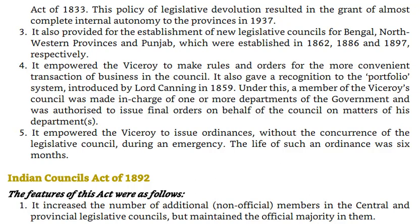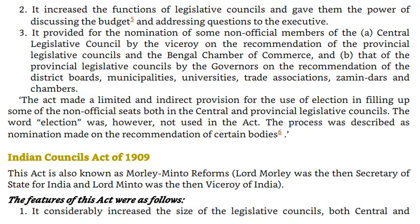Indian Councils Act of 1892. Its features were: 1. It increased the number of additional non-official members in the central and provincial legislative councils, but maintained the official majority in them. 2. It increased the functions of legislative councils and gave them the power of discussing the budget and addressing questions to the executive. 3. It provided for the nomination of some non-official members of (a) the central legislative council by the Viceroy on the recommendation of the provincial legislative councils and the Bengal Chamber of Commerce, and (b) the provincial legislative councils by the governors on the recommendation of district boards, municipalities, universities, trade associations, zamindars and chambers. The act made a limited and indirect provision for the use of election in filling up some non-official seats in both the central and provincial legislative councils — though the word 'election' was not used in the act; the process was described as nomination made on the recommendation of certain bodies.